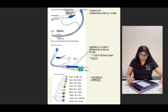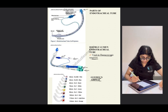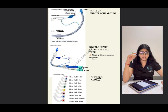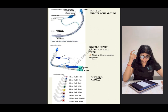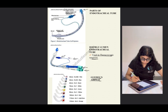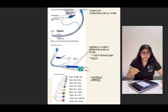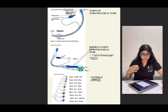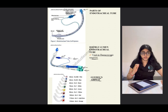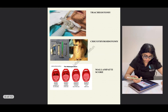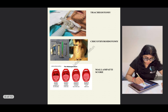Guedel's airway appearance depends on its size, with the diameter of the tube corresponding to different colors. The exam doesn't usually ask which color corresponds to which diameter — you just need to remember what a Guedel's airway looks like.